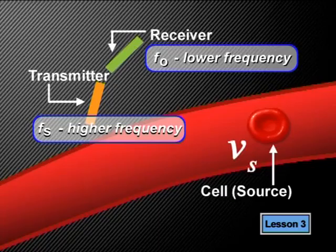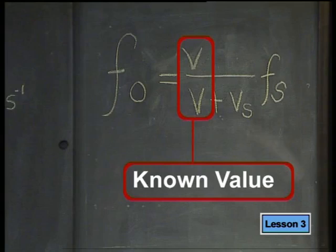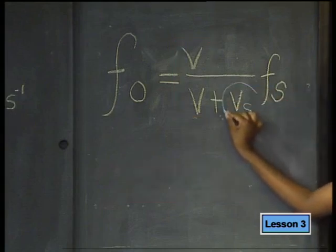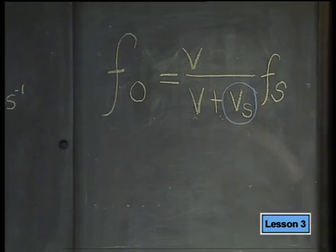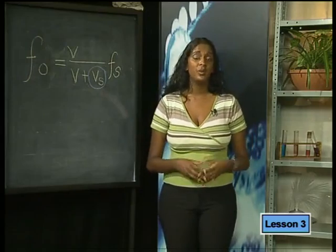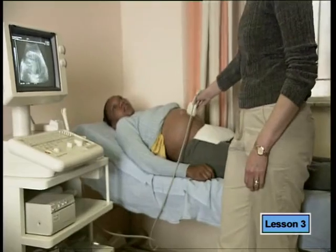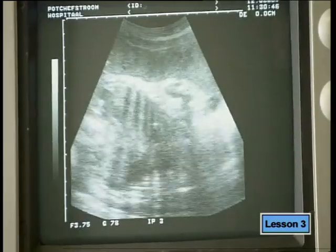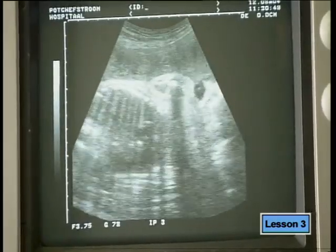The receiver used to pick up the reflected ultrasound can be tuned in to the lower frequency very accurately and can measure it. So using this ultrasound apparatus, we know both frequencies F_O and F_S. The speed of the ultrasound in blood is also known. This means that the only unknown value in the equation is V_S, the speed of the blood cell. By substituting in our known values, we can easily find the speed. The Doppler effect is used in a similar way to measure the heartbeat of unborn babies that are about two months old.